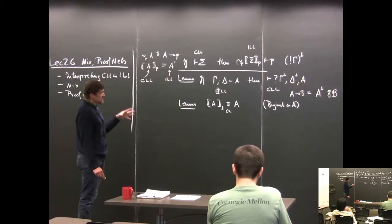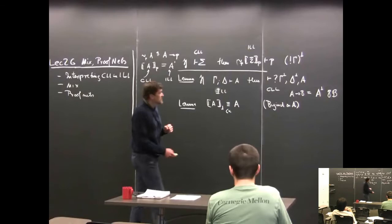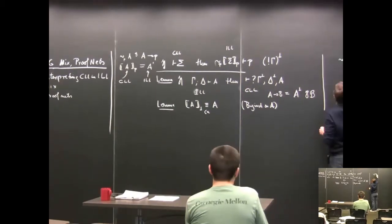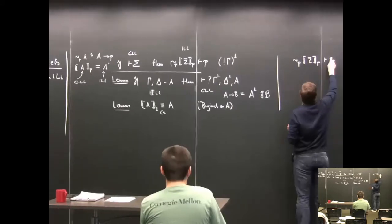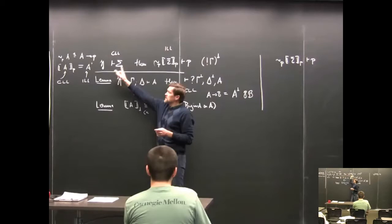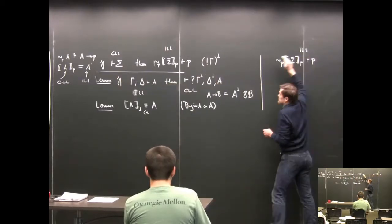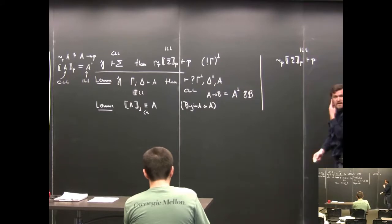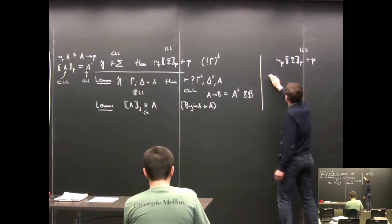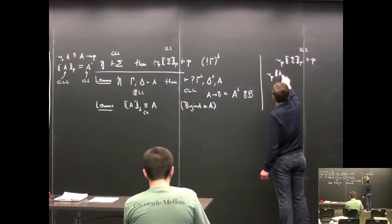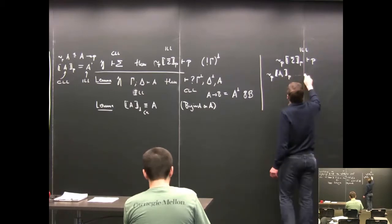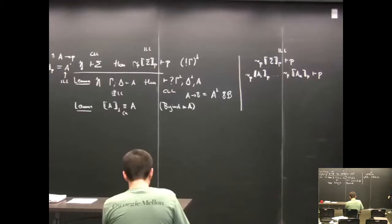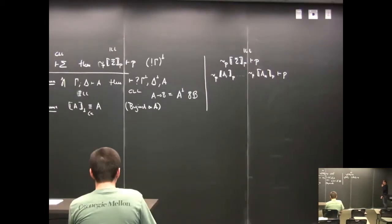Now the question is how do we piece these lemmas together to get the other direction. We start with: from the negation with respect to P of the translation of sigma with respect to P, we can prove P — and this is in intuitionistic linear logic. We expand sigma to consist of a bunch of A's, so we have not-sub-P of translation of A1 through An with respect to P, and we're trying to prove P. That's what it actually looks like.